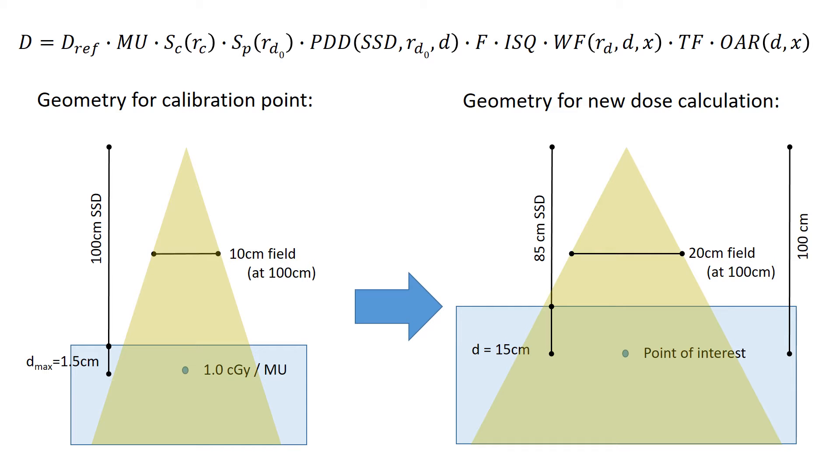And another thing to note is that there's a few of these factors above that we don't really need. There's no wedge in the field, there's no tray, and there's no off-axis ratio because we're calculating dose at central axis. So we can basically get rid of those factors as we move on.